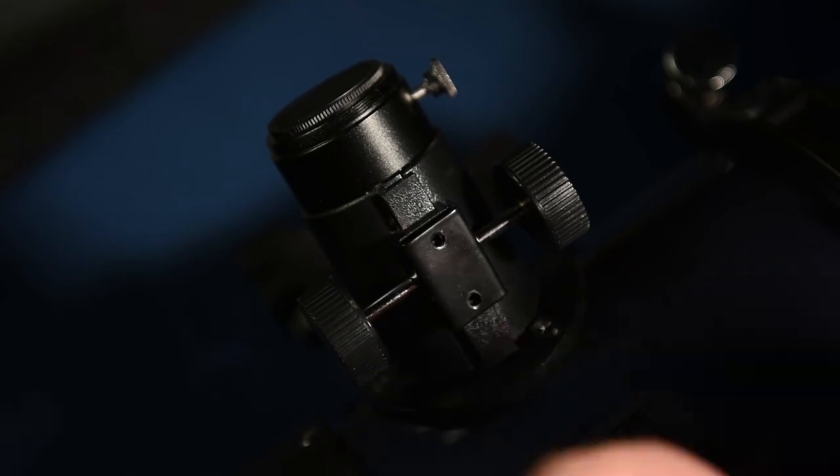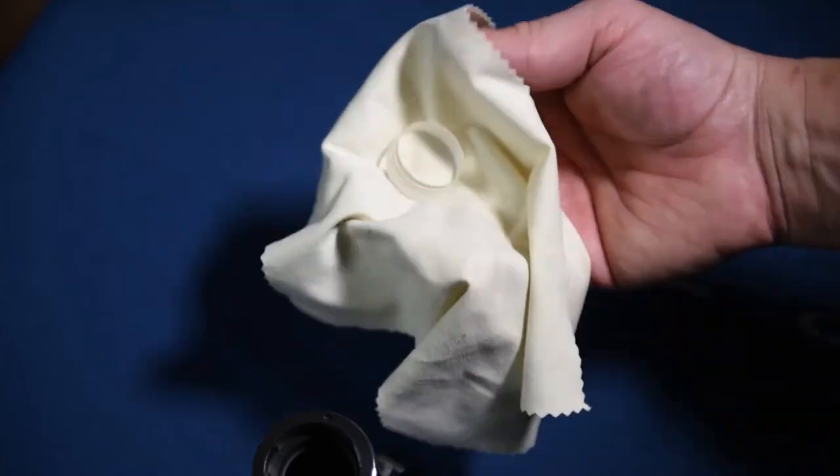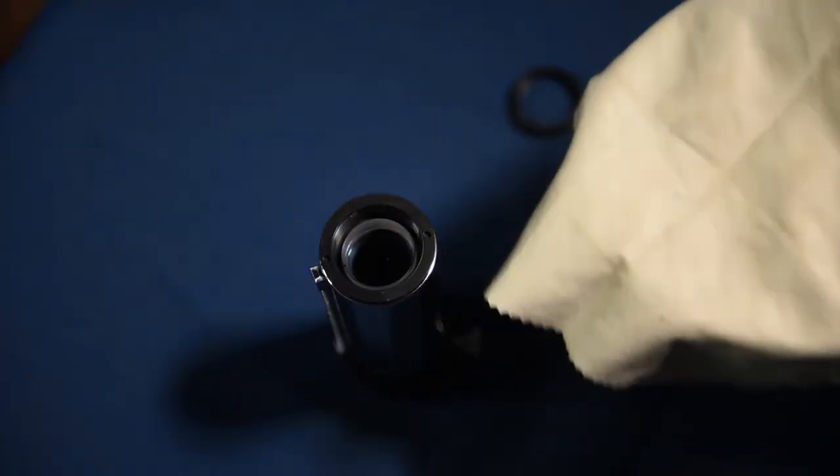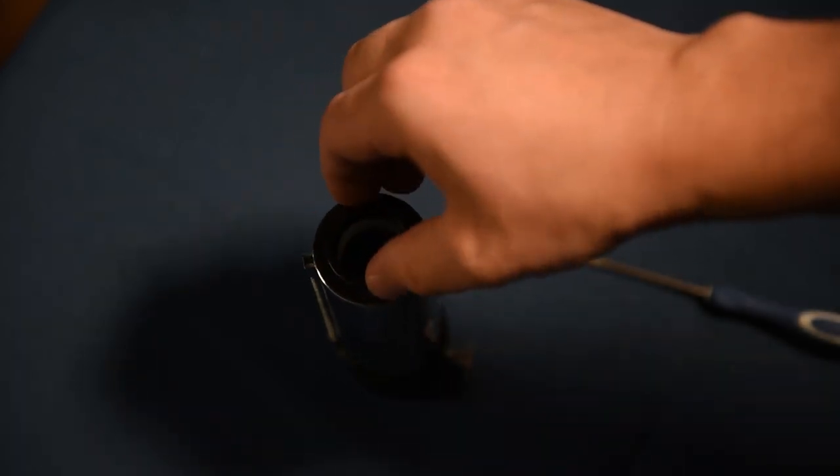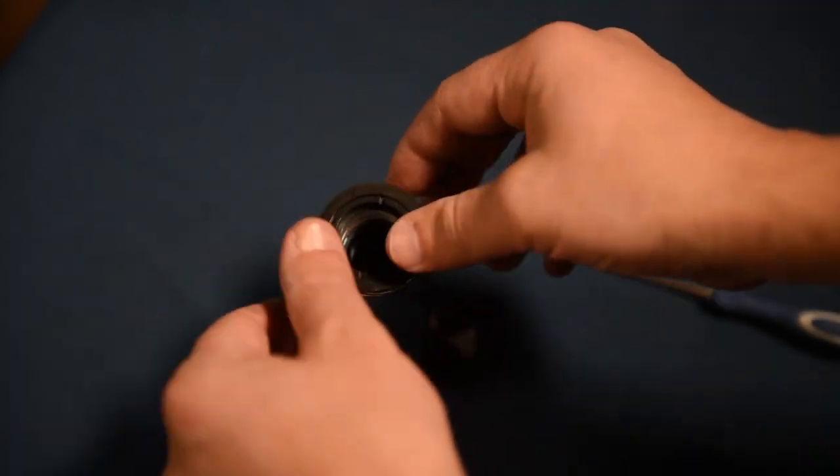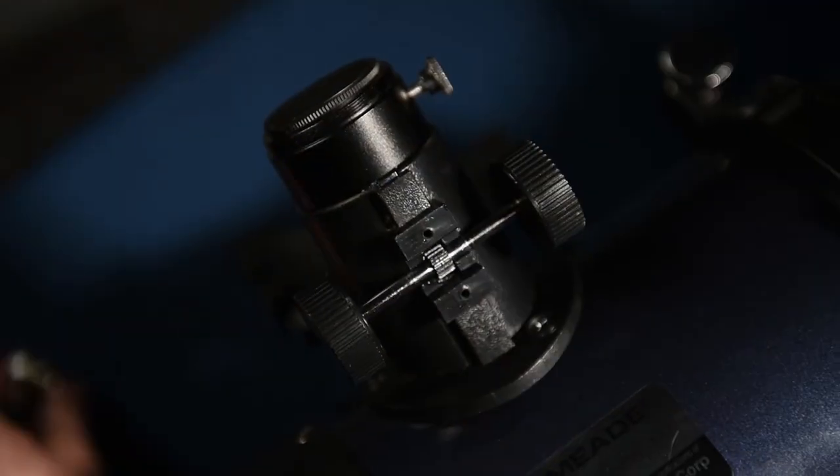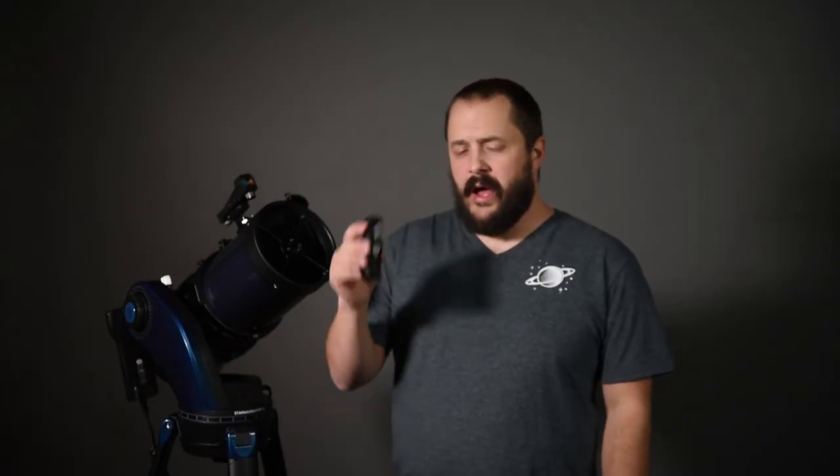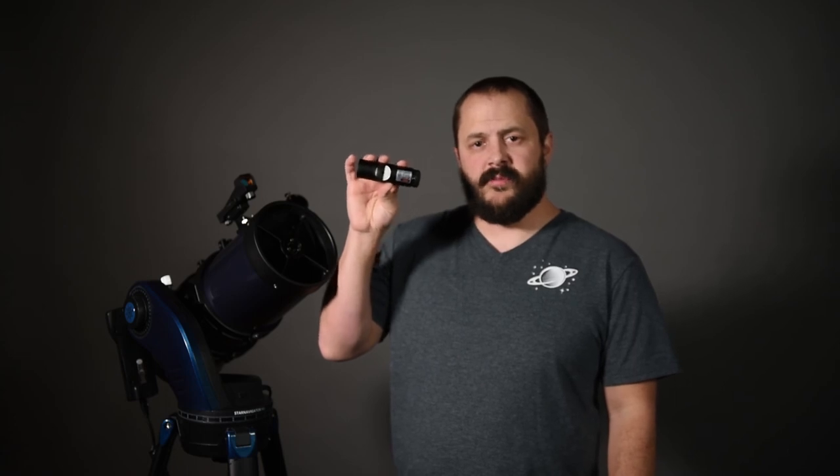When you're all done with your laser collimation, you'll just want to reassemble your telescope exactly how you took it apart and your telescope will be good to go for observing. And that's how it's done. I will leave a link in the description below where you can find a laser collimator like the one used in this video. And hopefully we'll see you on the next video. Have a great day.